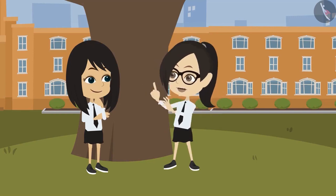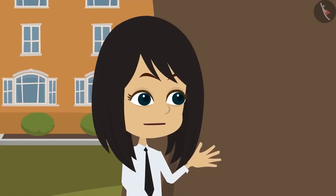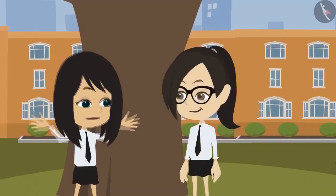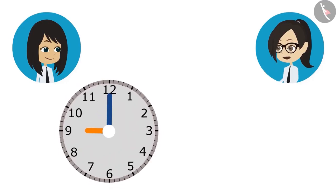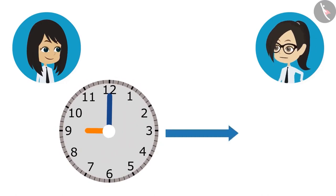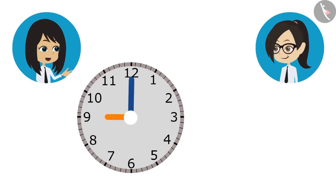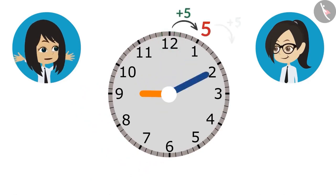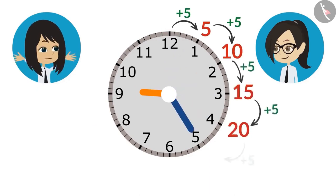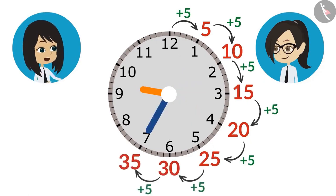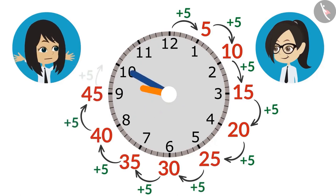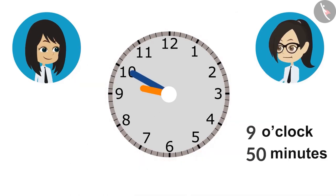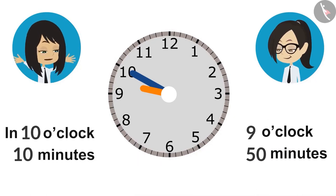Now let us find out: a class that is 50 minutes long — at what time will it finish if it starts at 9 o'clock in the morning? The start time and duration are known; we have to find the end time. The minute hand is right now at 12. When we bring it to 1, it will be 5 minutes; to 2, 10 minutes; 15 at 3, 20 at 4, 25 at 5, 30 at 6, 35 at 7, 40 at 8, 45 at 9, and 50 minutes at 10. This means our class will end at 50 minutes past 9 o'clock, which we can also say is 10 minutes to 10 o'clock.